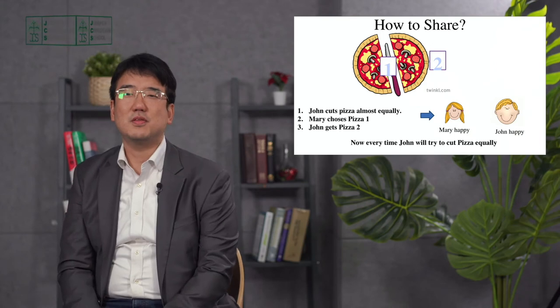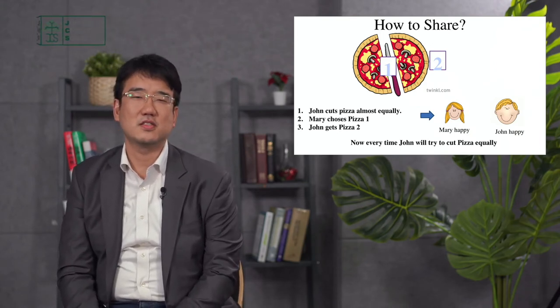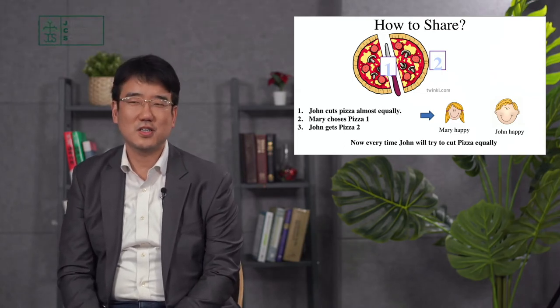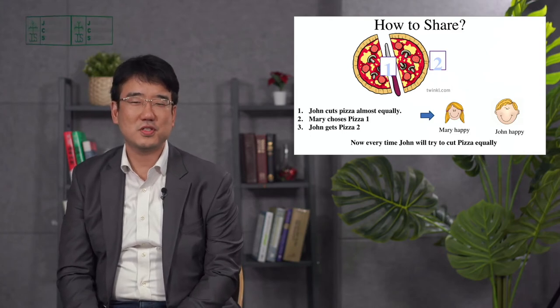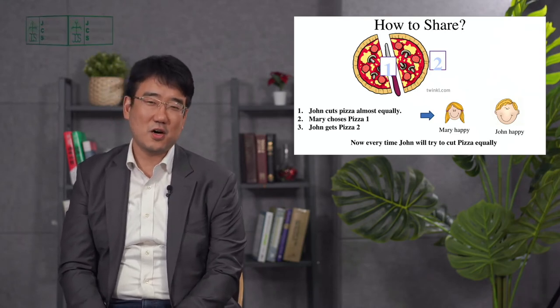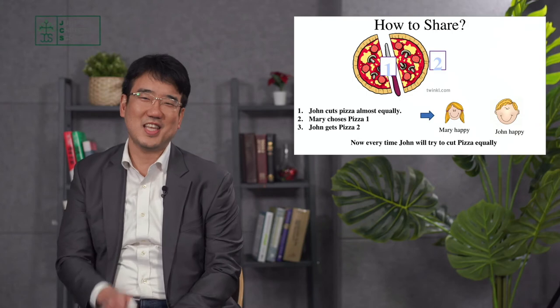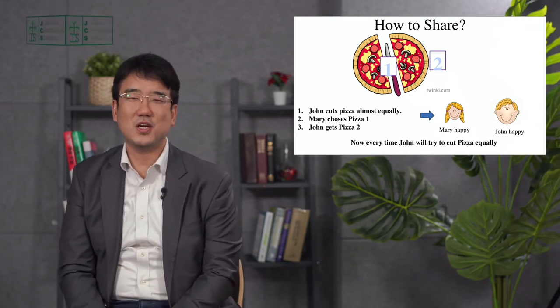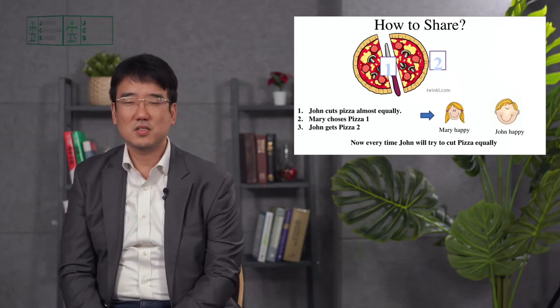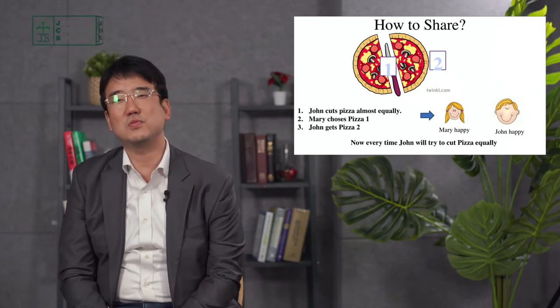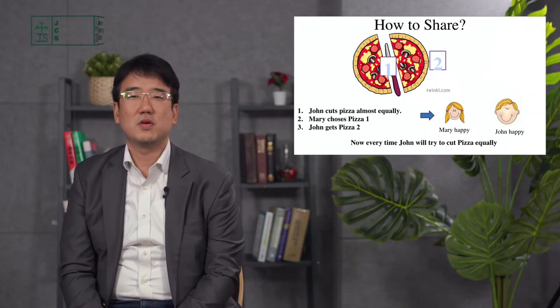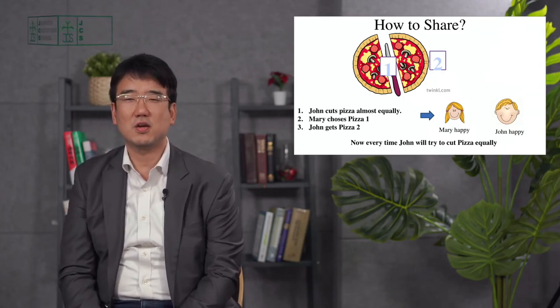So next time what happens when Mary and John have to have a pizza again? Then John thinks last time I cut it wrong. And then Mary's going to choose first again and she's going to choose the bigger one and I'm going to get the smaller one. So John now tries really hard to cut the pizza in half. So that even if Mary gets to choose pizza one, he'll still have the same pizza two. So now we're both happy and this is what people think is quite fair. So pizza half and half we think is most fair, most justice.